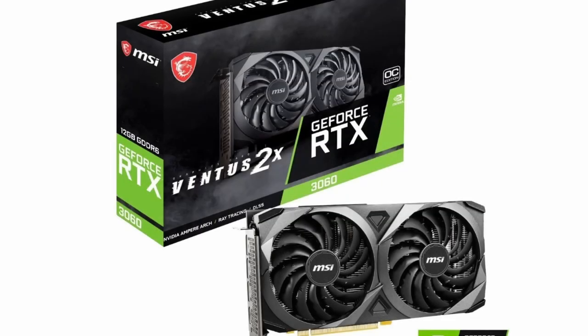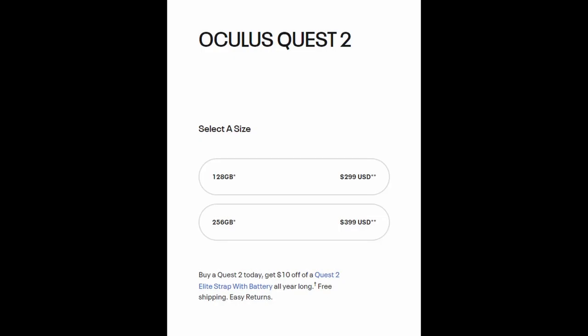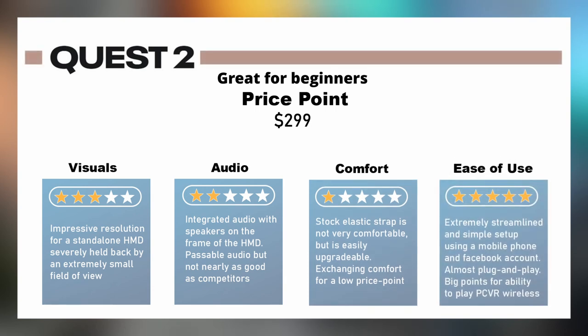Now if you want to play PC VR games, obviously you'll need a PC. For the Quest 2, I'd recommend at least an Nvidia 60 series card to run things fluidly. If your main interest is in playing PC VR games, I would suggest going with the 128 gig model because you won't need as much onboard storage. If you're planning on playing more native Quest 2 games, I would recommend the 256 gig model at $399. The Quest 2 doesn't have the best visuals, audio, or comfort, but what it lacks in these things it makes up for in versatility. It's absolutely worth the $300 for the 128 gig model, at least to figure out if VR is right for you.